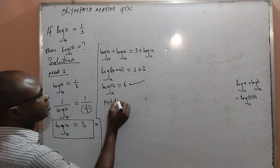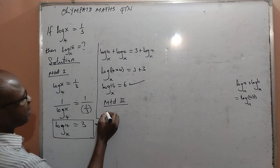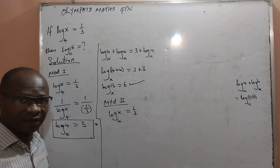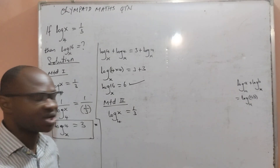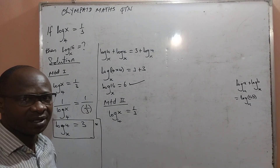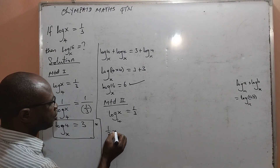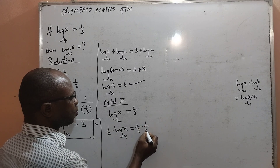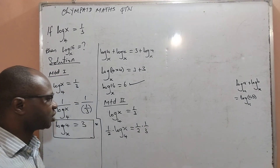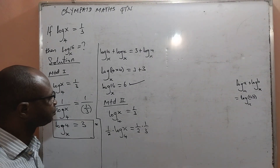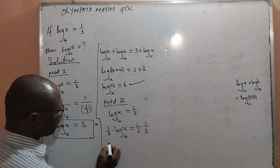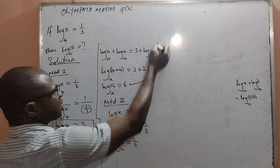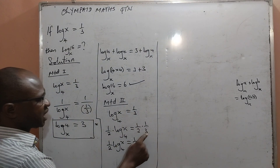Method 2: taking the problem log x base 4 equal to 1/3. What I will do is multiply both sides of the equation by 1/2. That means I will have (1/2) × log x base 4 equals (1/2) × (1/3), which gives me (1/2) log x base 4 equal to 1/6.